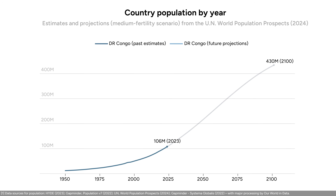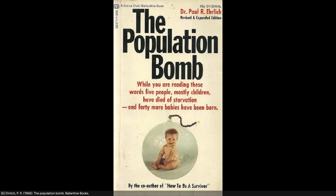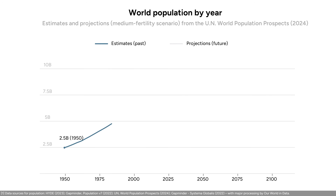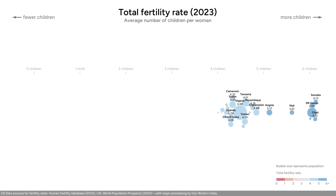Their population has grown to 100 million and is projected to quadruple by the end of the century. This type of explosive growth led to a fear of overpopulation in the 20th century. But data tells a different story. The current UN projections estimate the world population will peak at 10 billion before gradually declining, and we can understand why by looking at what's happening to the countries in the next groups.